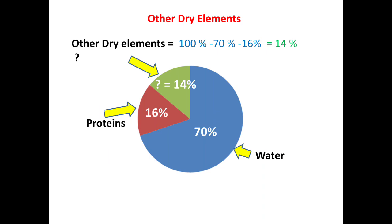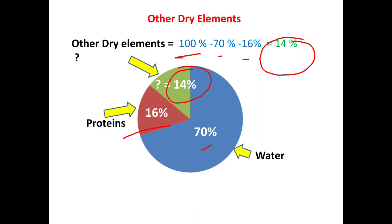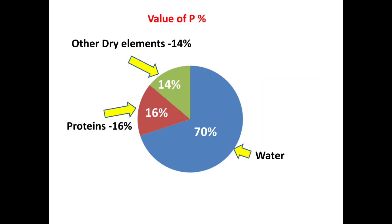Now the other dry elements will be: water is 70%, protein is 16%. So out of 100 if you reduce 70 and 16, other dry elements are 14%. So out of 100%, 16% plus 14% is 30%. So I have redrawn the pie chart and we have shown the values of water, proteins and other dry elements as we found out.